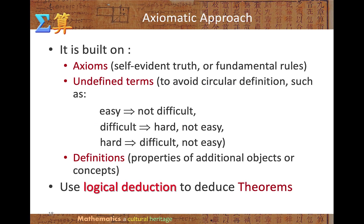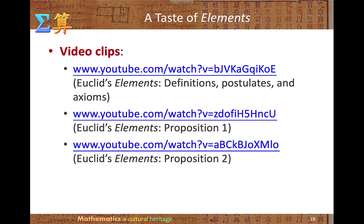The system is built on what we call axioms — self-evident truths or fundamental rules. Axioms involve undefined terms as well as definitions. With all these, it uses logical deduction to derive theorems. The practice we follow today in all mathematics textbooks and research actually follows this practice. I would like you to pause the video and spend time watching the fundamentals of Euclid's Elements, starting with definitions, postulates, and axioms. Also read Proposition 1 and 2 of Book 1 of the Elements.